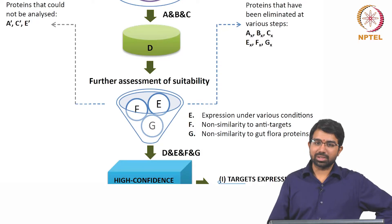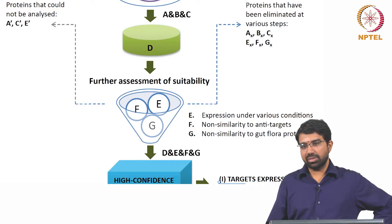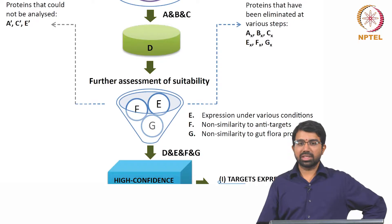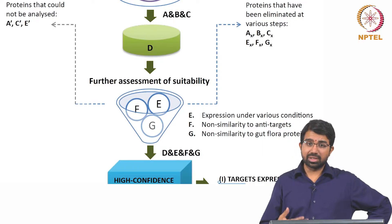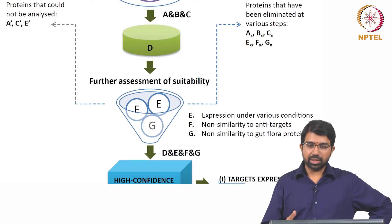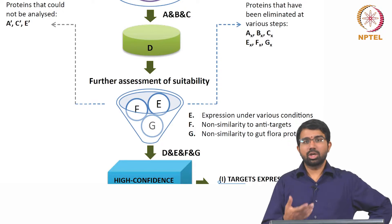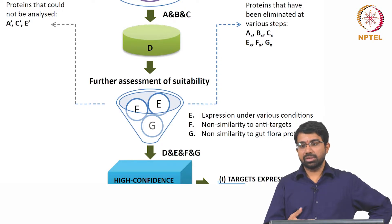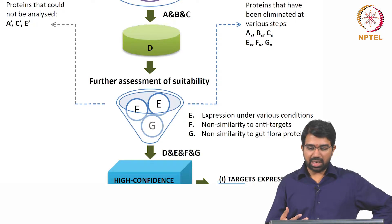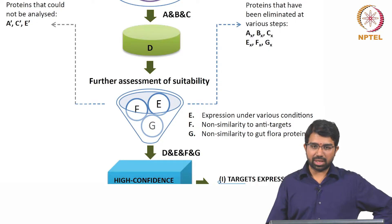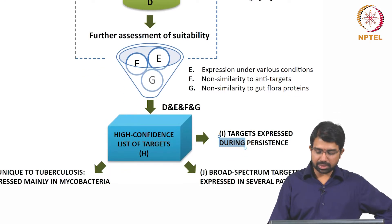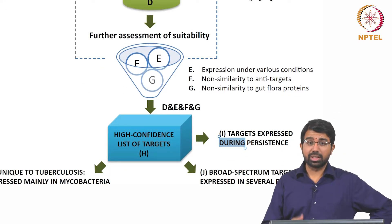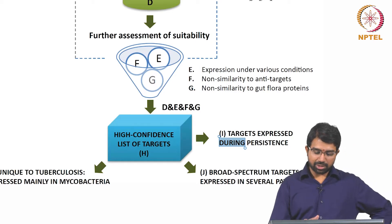We also looked at gut flora proteins, because many adverse reactions to antibiotics come from affecting the gut flora. You have several trillion organisms in the gut, and many are going to be affected by any antibiotic you take — which is why doctors typically prescribe vitamins alongside antibiotics. So we looked at known gut flora proteins and eliminated proteins with homology to these, as it might help find a better target to begin with. After all these steps we arrived at what we called a high confidence list of targets.